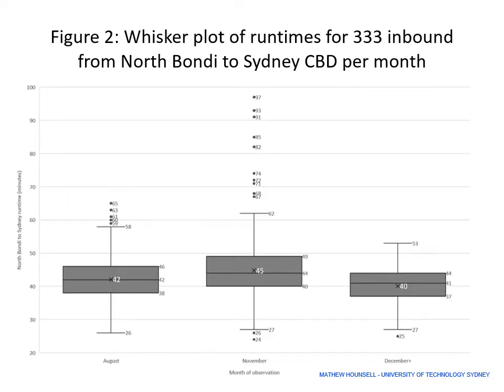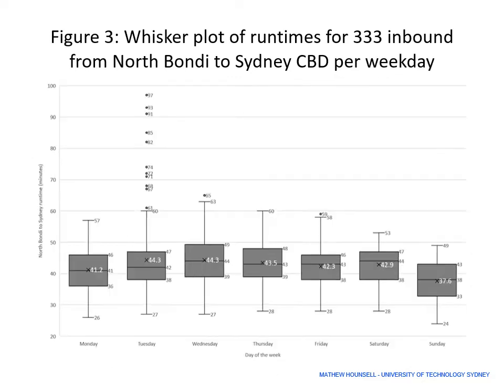Using a whisker plot, the November data shows a significant interquartile range of nine minutes and a range from 27 to 62 minutes, with many outliers up to 97 minutes, indicating services could run substantially better. The whisker plot for inbound run time by day of week shows Saturday has more controlled run times, and Sunday has substantially better run times with a mean of 37.6 minutes and an IQR between 33 and 43 minutes. Traffic is a substantial problem, with Tuesday, Wednesday, and Thursday being the highest-traffic days.